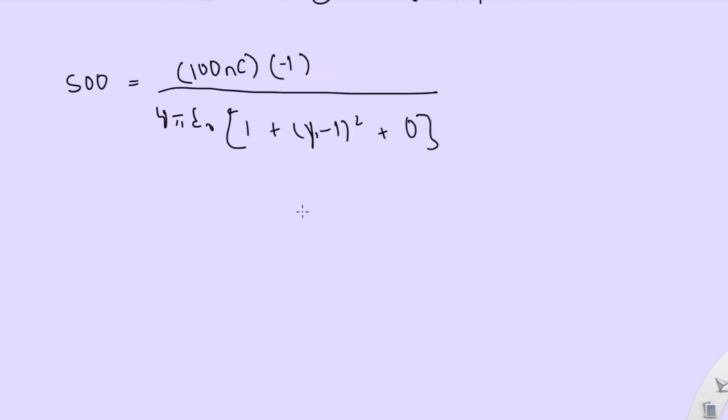You could bring this over and get negative 500 over 100 nanoCoulombs equals 1 over—this would just be 4πε₀. And then you could keep solving this. I don't really need to do the rest of this. I'm not gonna waste my time doing the rest of this. But you'd basically just solve for Y here. It's a simple algebra problem at this point. And you would get Y at 2 points.